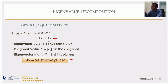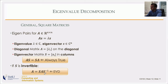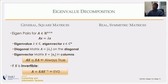If S is invertible, then we can say A = S Λ S⁻¹, obtained by multiplying both sides by S⁻¹ on the right. That is eigenvalue decomposition, or diagonalization, and it holds for a general real matrix.